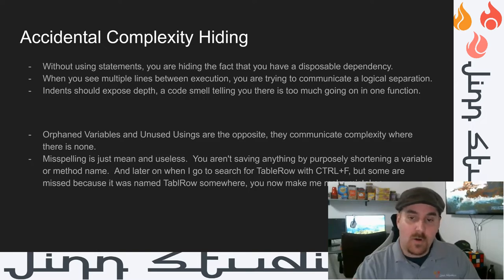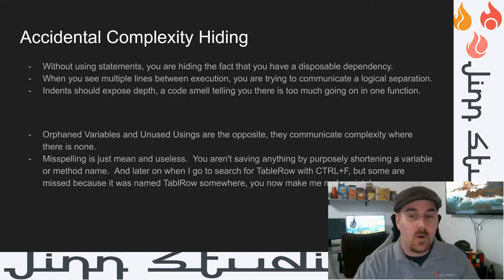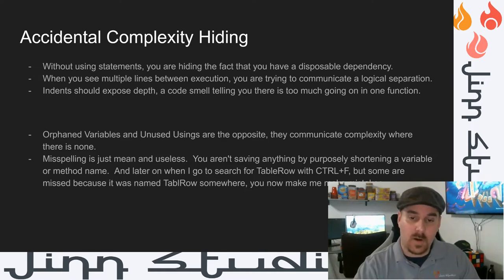Misspelling is just mean and useless. You aren't saving anything by shortening a variable or method name. When I go to search for 'table row' with Ctrl+F, some are missed because it was named T-A-B-L-R-O-W somewhere — you'd make me make mistakes. Many developers will profess excellence in math, algorithms, AI, or UX, but come across as intern or junior developers because of how much time senior devs have to take on pull requests, trying to understand their messy code and failing the PR over and over for a lack of code pride.